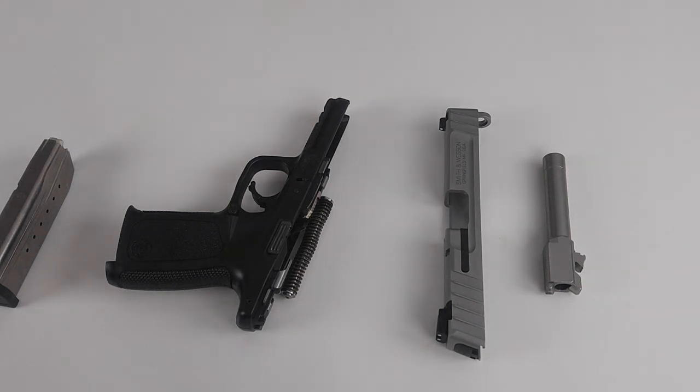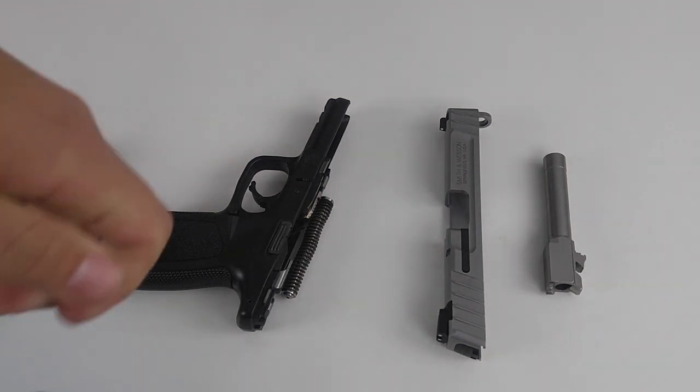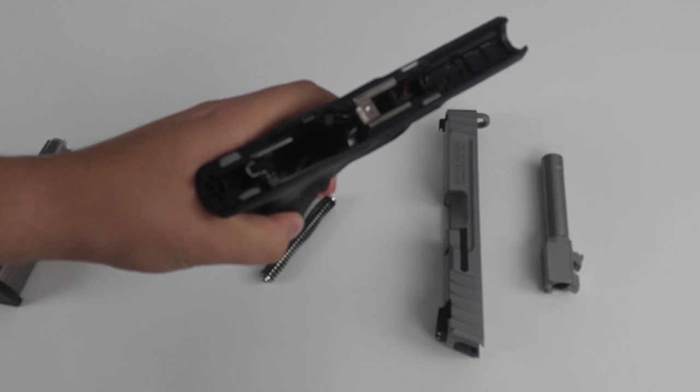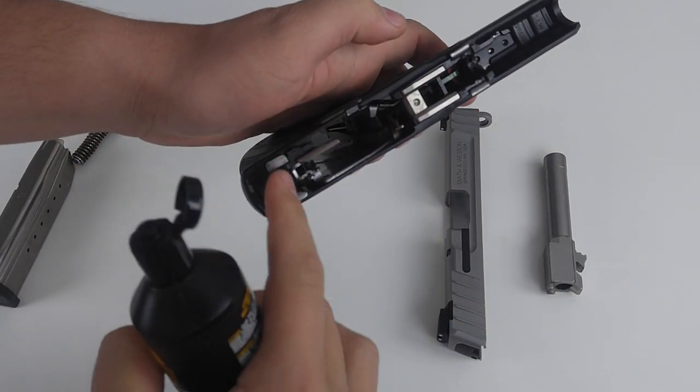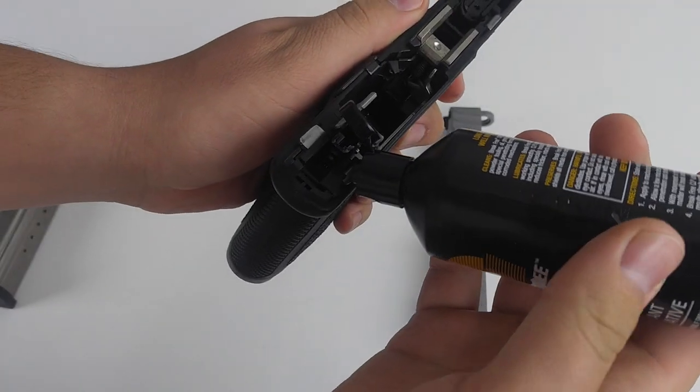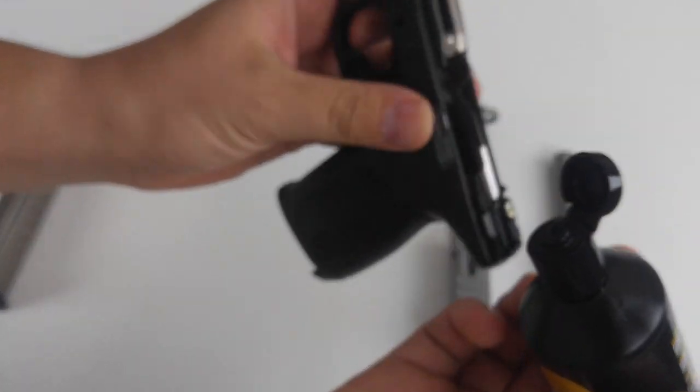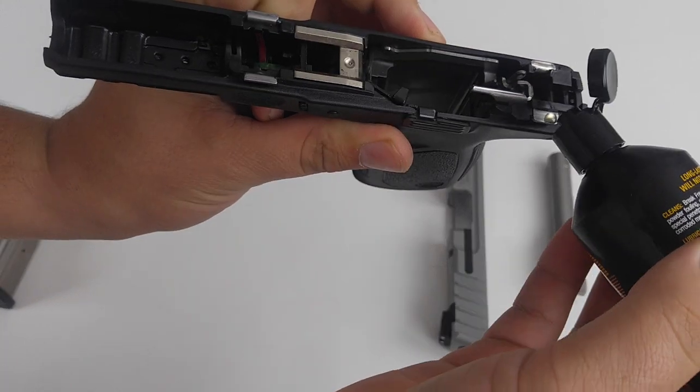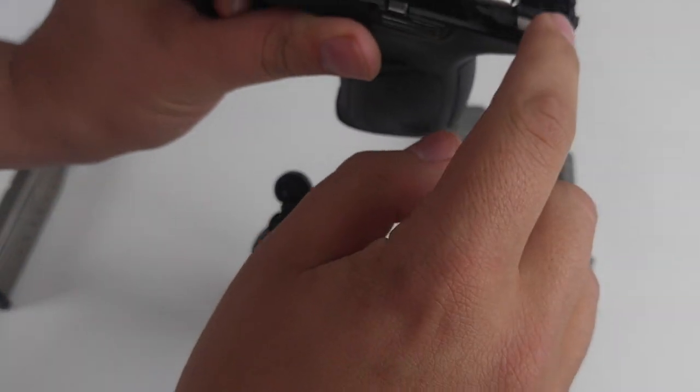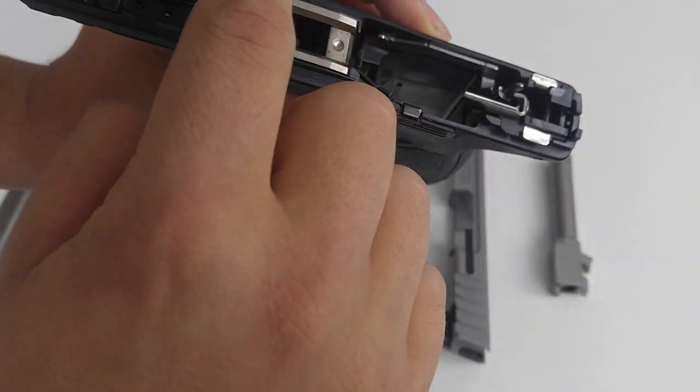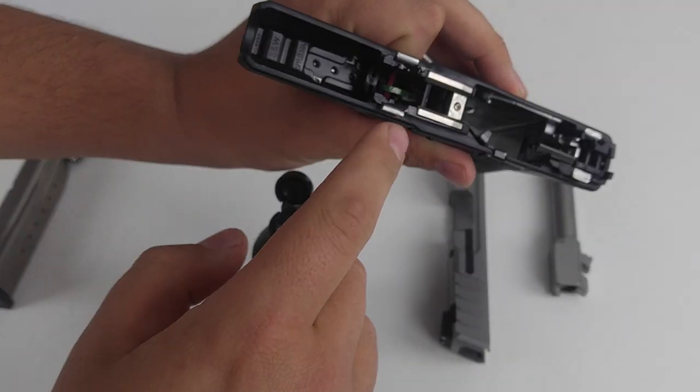So the first places that we're going to oil are right here along the side, the little metal slides right here. One, two, three, four. So we're just going to put a little drop of oil on each side. You do not need to use a lot, and just take your finger and just get it on there like that.